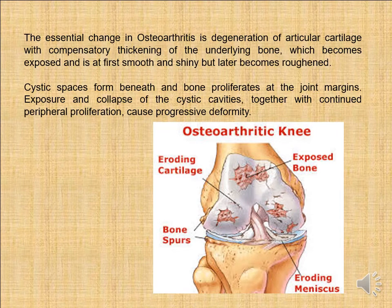The essential change in osteoarthritis is degeneration of articular cartilage with compensatory thickening of the underlying bone, which becomes exposed and is initially smooth and shiny, but later becomes rough. In fact, the normal articular cartilage covering the surface of the joint is smooth and shiny, but after its destruction the surface becomes rough.